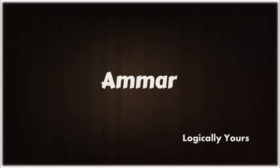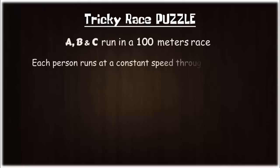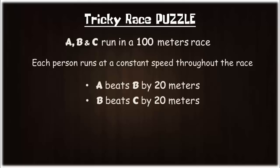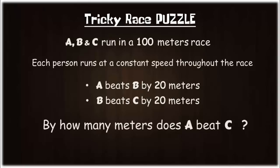What's up logical people, this is Amar. A, B, and C run in a 100 meters race. Each person runs at a constant speed throughout the race. A beats B by 20 meters, B beats C by 20 meters. By how many meters does A beat C? Please pause the video and think logically.